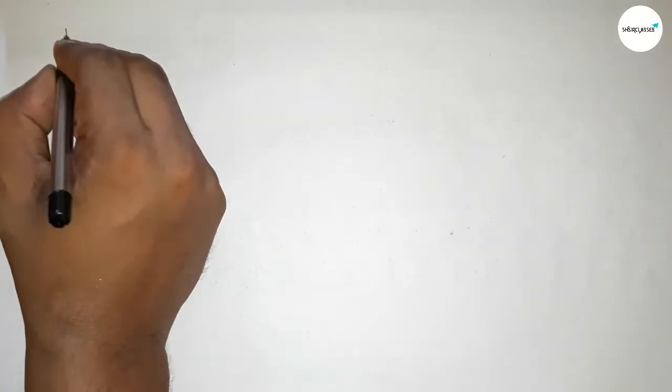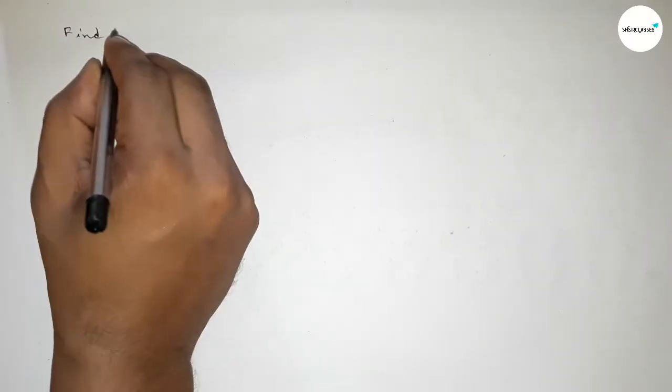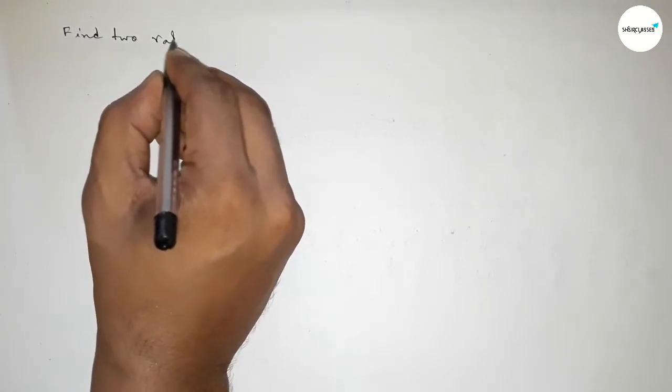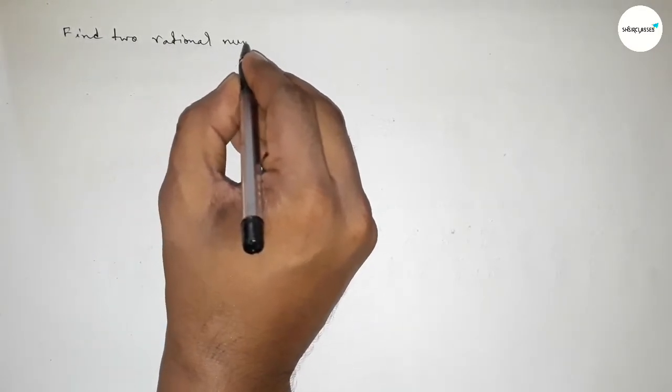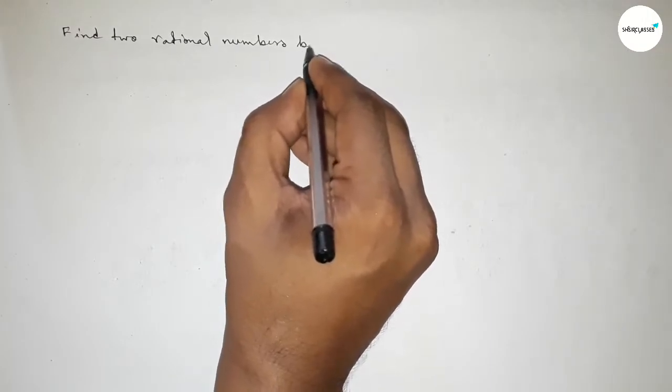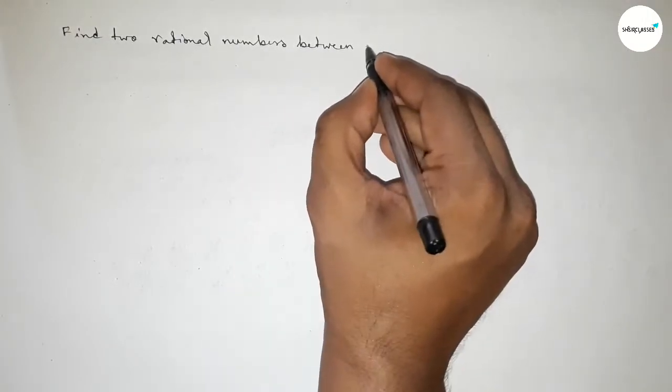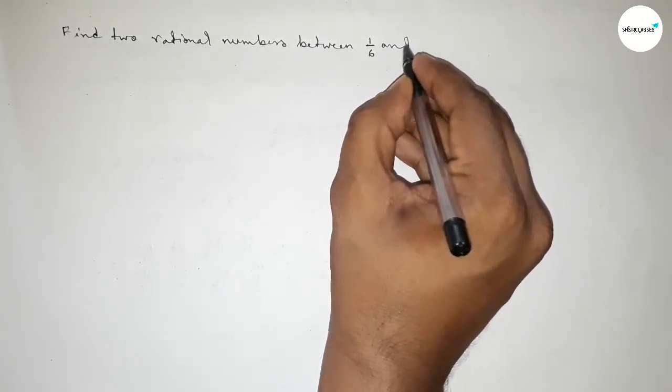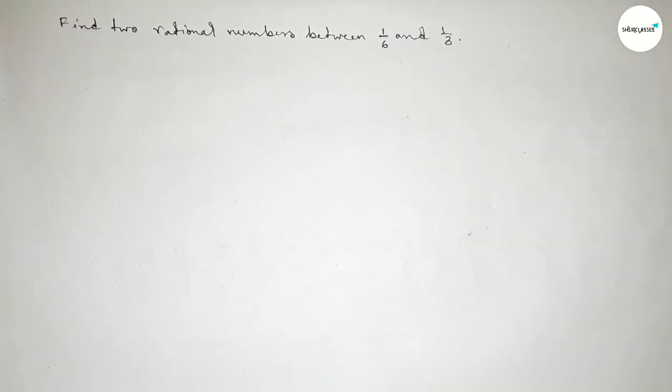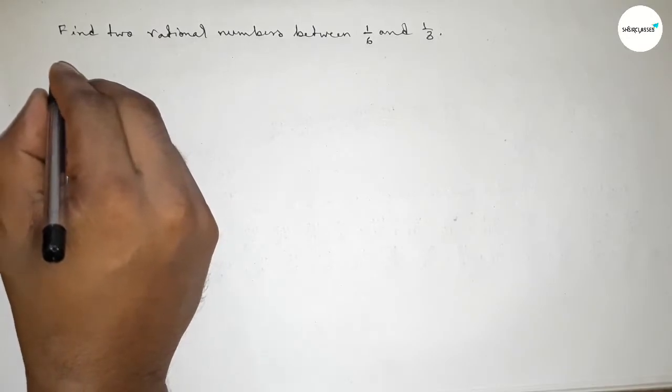Hi everyone, welcome to SI Share Classes. Today in this video we have to find out two rational numbers between 1 over 6 and 1 over 3. So let's start the video. First of all, let's solve this problem.